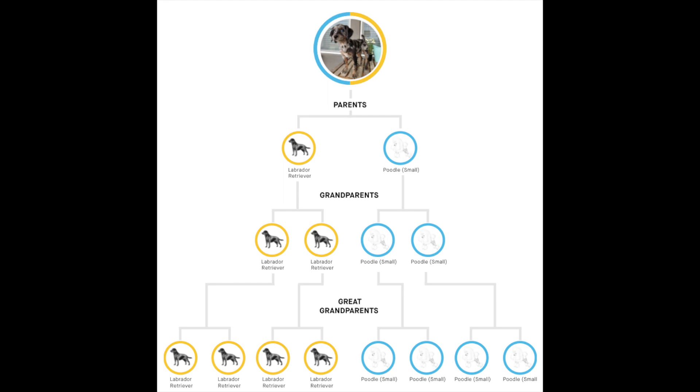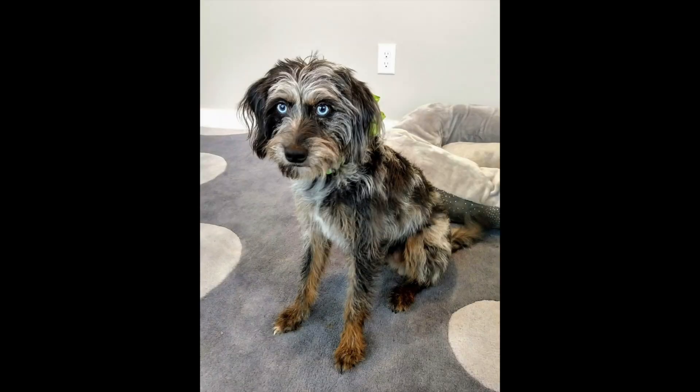An organism inherits one set of its chromosomes from its mother and one set from its father. However, this doesn't mean that offspring are the average of their parents. As we saw with Spritely the labradoodle, she inherited one set of labrador retriever chromosomes and one set of poodle chromosomes, but the specific pattern of her coat depended on which traits were dominant. Because short coats are dominant to long coats, she has a shorter coat like a lab, but it is wiry and low shedding because those poodle traits are dominant.